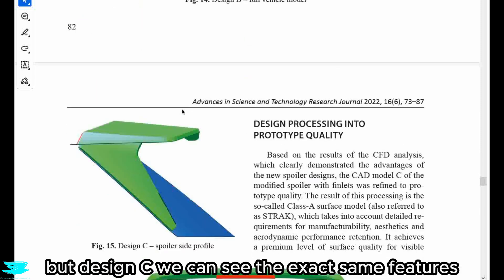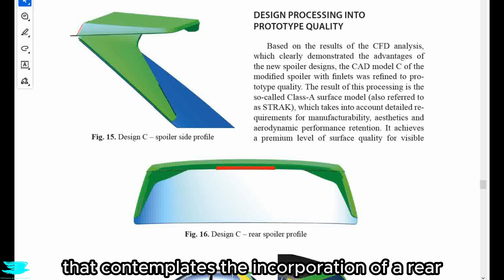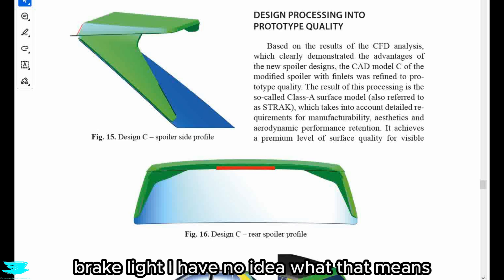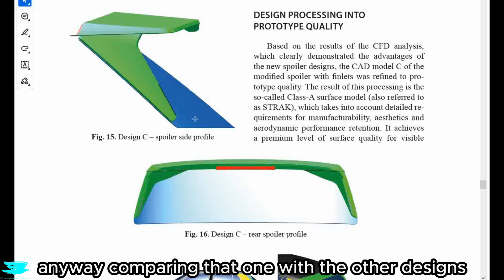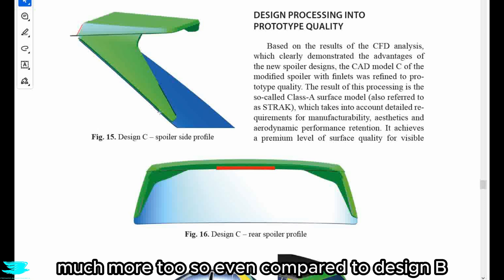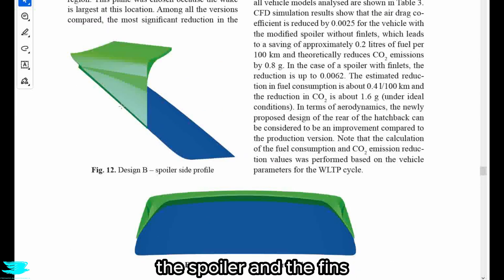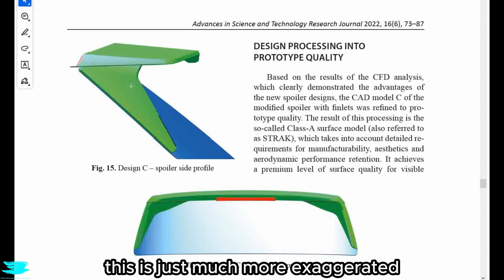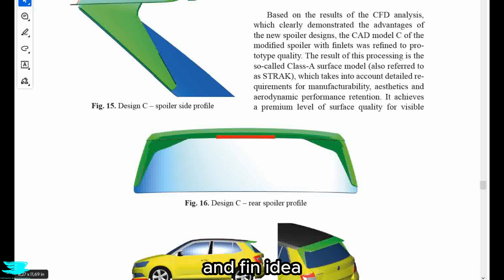But design C, we can see the exact same features as we had in design B. The authors say that it is a two-piece spoiler that contemplates the incorporation of a rear brake light. I have no idea what that means. There's a brake light on it though. Anyway, comparing that one with the other designs, it's obvious that this spoiler is much longer and then the fins extend down the rear window much more too. So even compared to design B, which has pretty much the same elements, the spoiler and the fins, this is just much more exaggerated. So I guess we could kind of think of this as the most extreme iteration of the spoiler and fin idea.